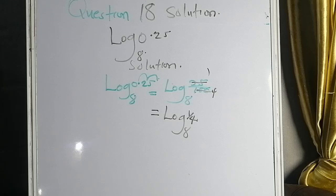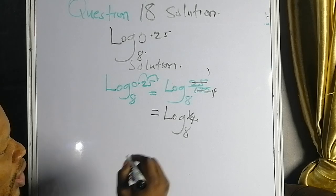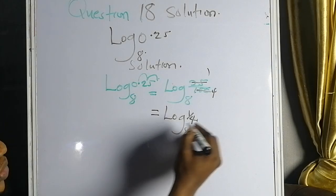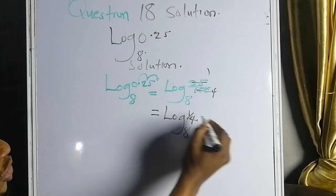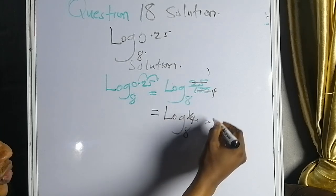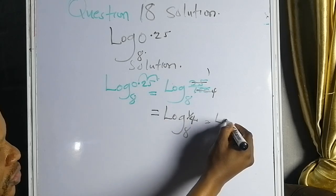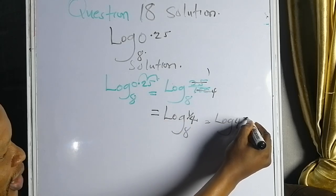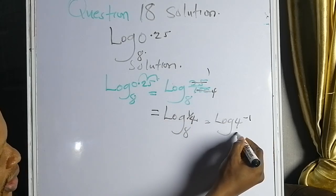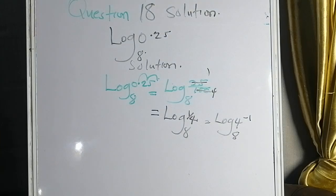Log 1 over 4 base 8 is the same thing as log of 4 raised to the power of minus 1, base 8 — because 1 over 4 is the same thing as 4 raised to the power minus 1. We're trying to simplify and break it down further.